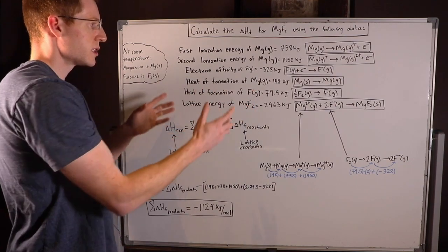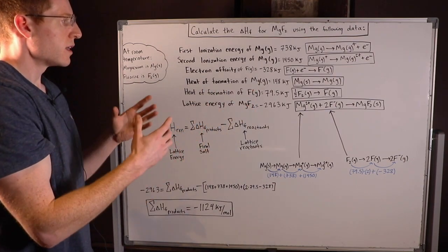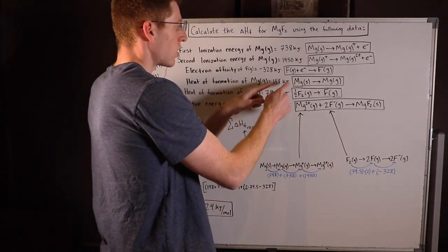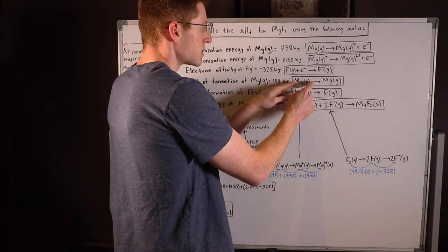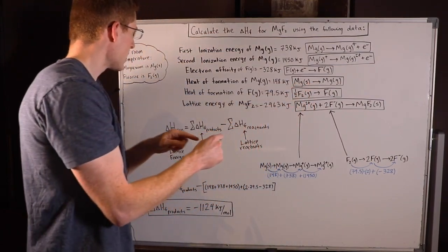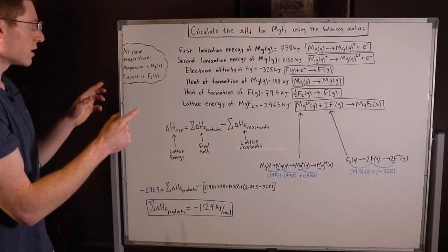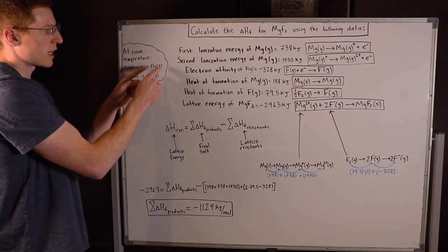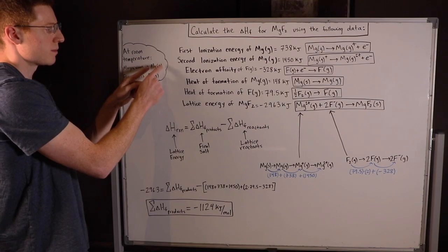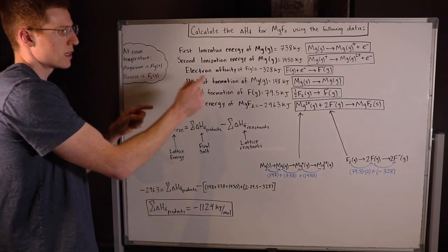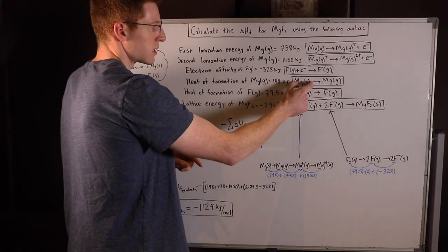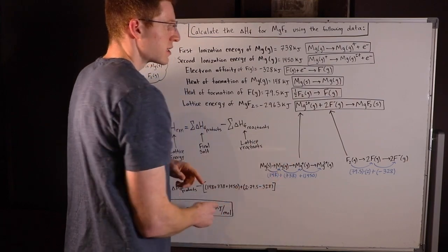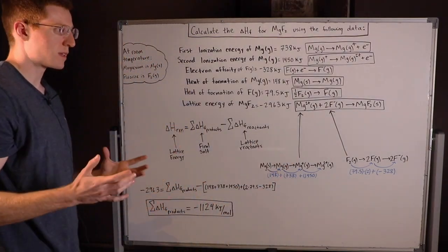The heat of formation of magnesium gas — again, we start with the standard state of the reactant. At room temperature, which is roughly standard state, it's going to be magnesium solid. So this is our reactant, and we're simply changing phases to magnesium gas.